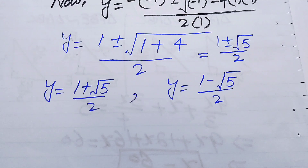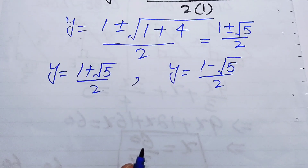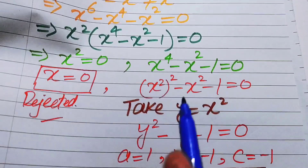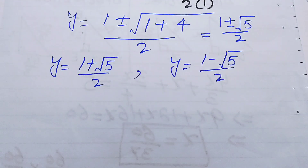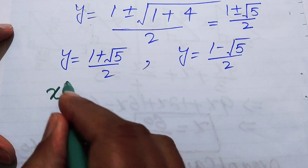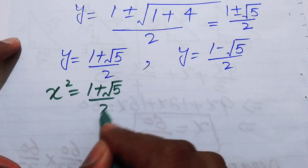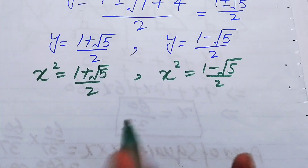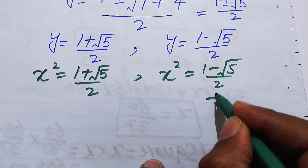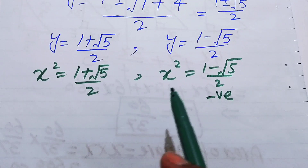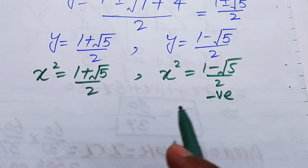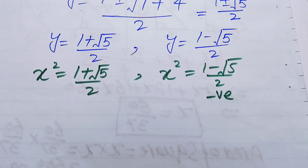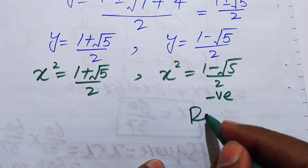We back-substitute y = x². This gives two cases: x² = (1 + √5)/2, or x² = (1 − √5)/2. The second case gives a negative value. Taking the square root would give complex roots, but we need real values since x is a side length of a triangle, so we reject that case.